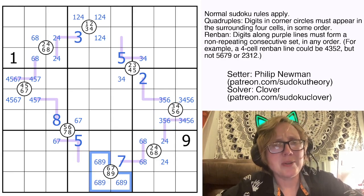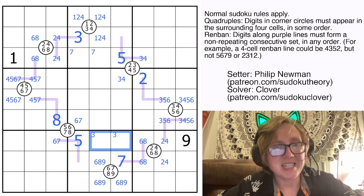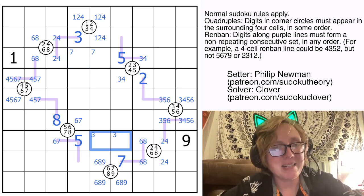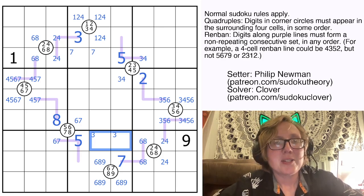And one interesting thing to know is that now I know that 7 in this region can only go in these two cells, and that 3 in this region can only go in these two cells. That doesn't give me any obvious eliminations yet, but let's just hang on to that.